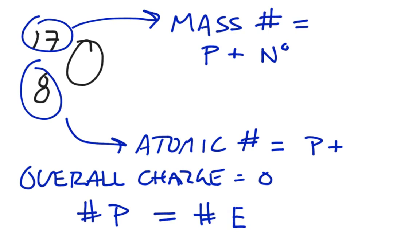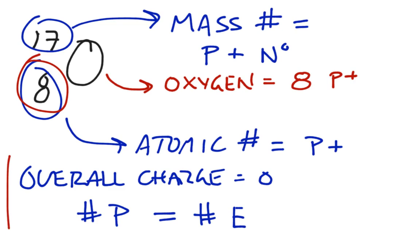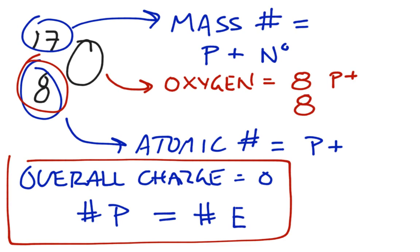In this particular example here, we're talking about oxygen. That's given away by the symbol O. Now, oxygen always has the same number of protons. In this case, we are given that number down here with the eight, but it is redundant. We have eight protons. Due to the fact that the overall charge is always going to be zero, the number of protons has to be equal to the number of electrons. Therefore, we also have eight electrons.